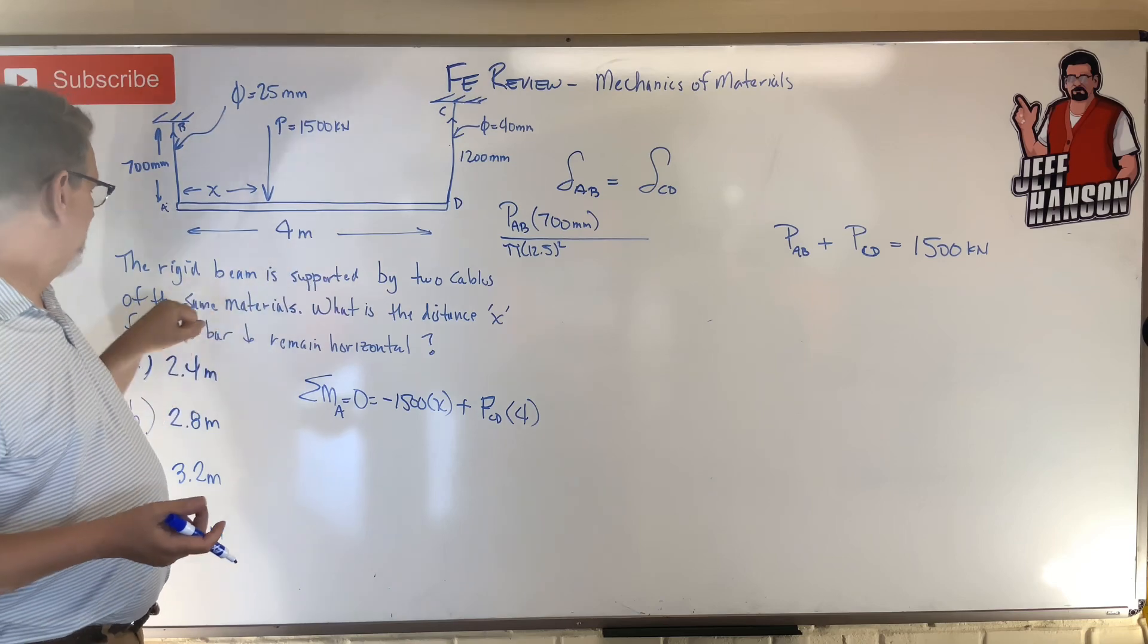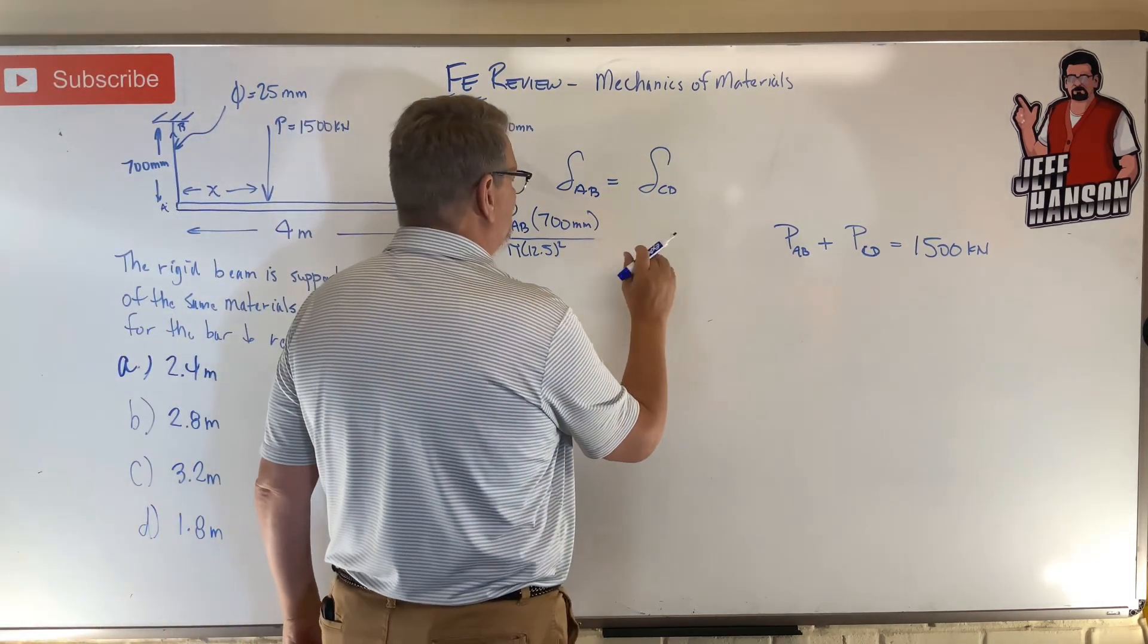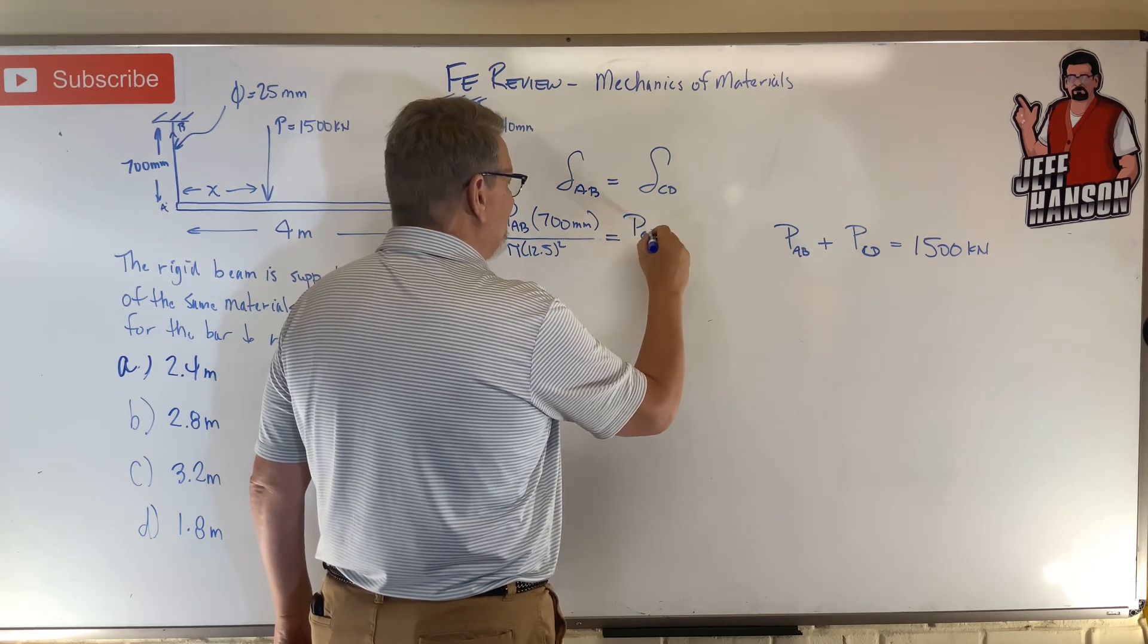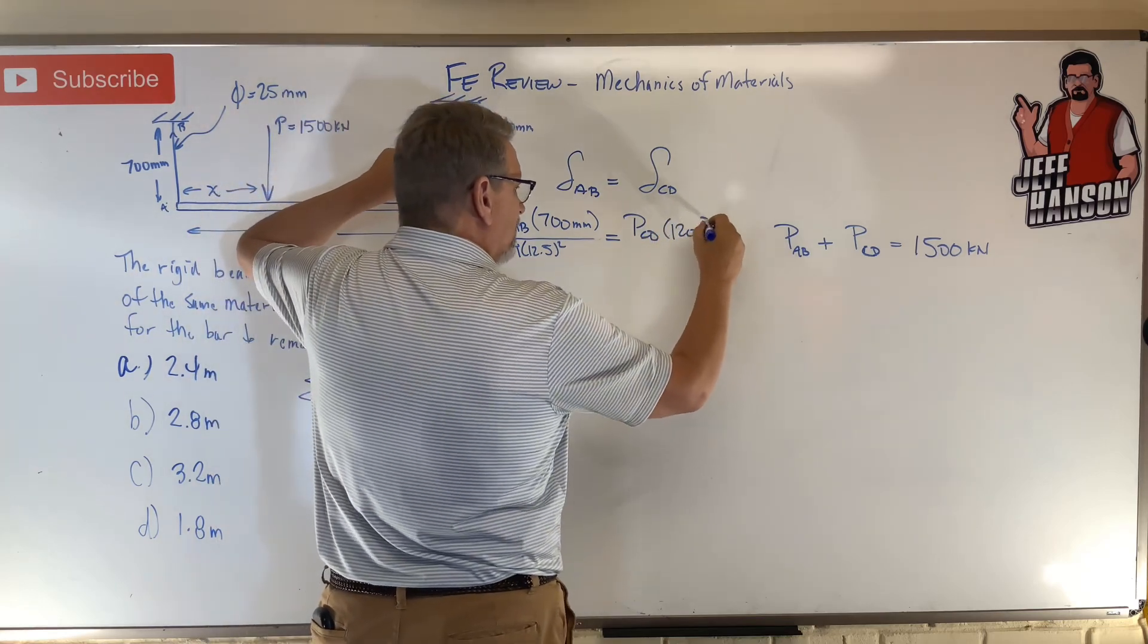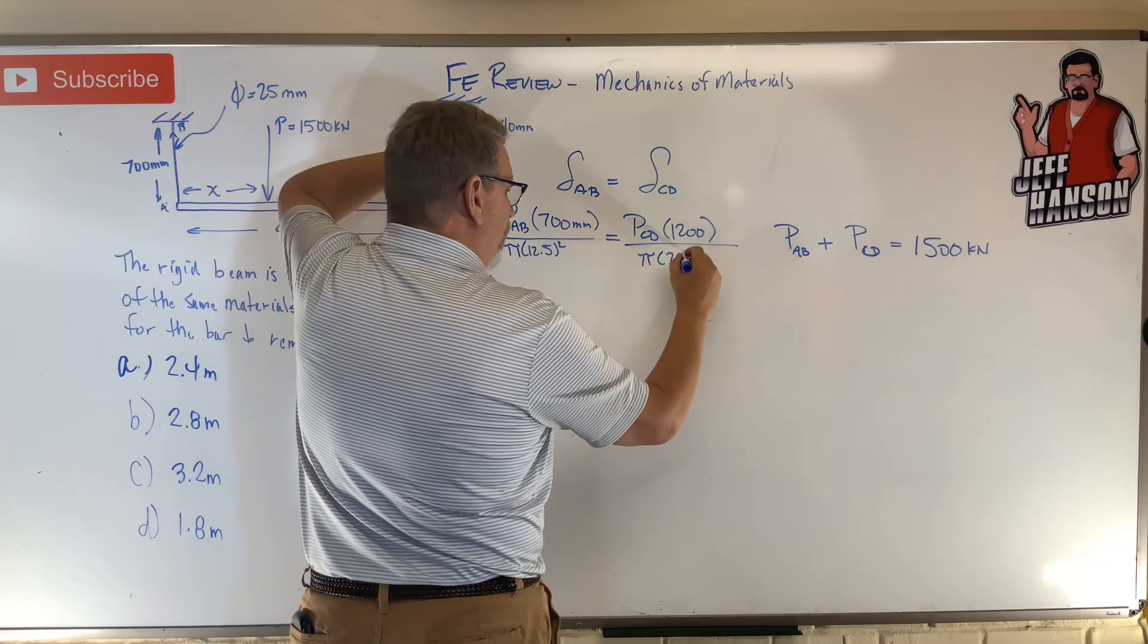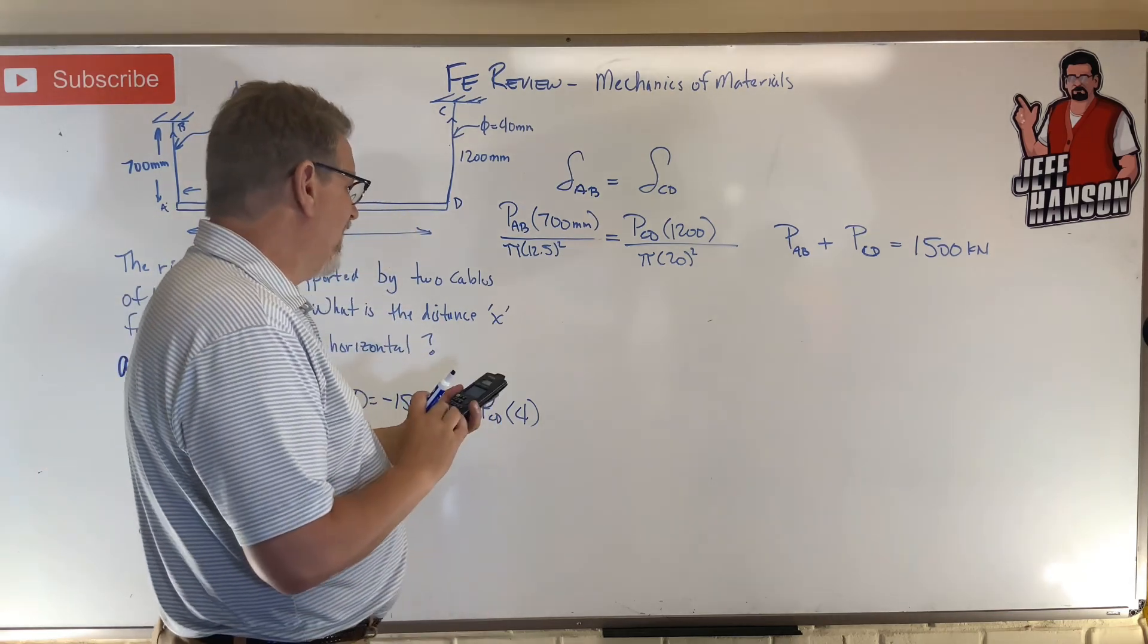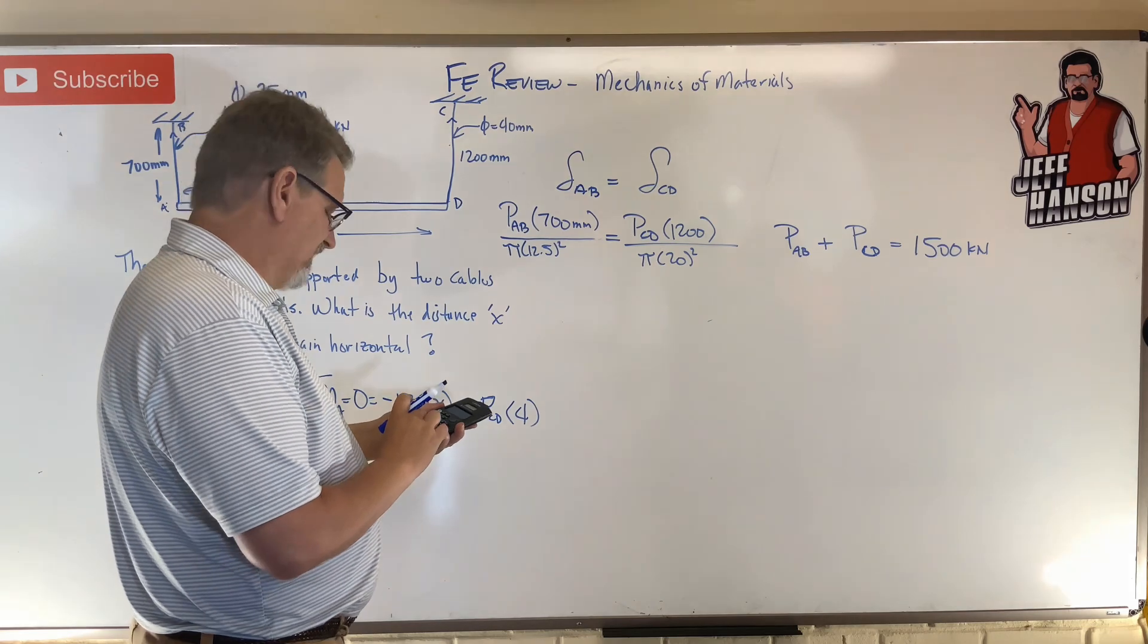And guess what? E is the same on this side as it is on this side because it's the same material, so the E's are going to divide away. Let's go over here. I'm going to have P_CD times its L of 1200 divided by its cross-sectional area which is pi times 20 squared.